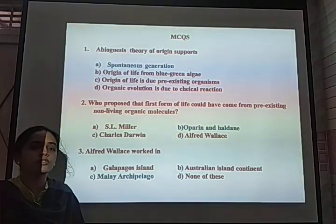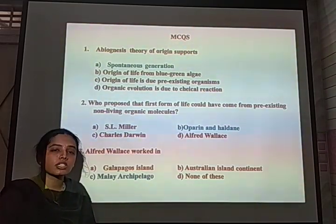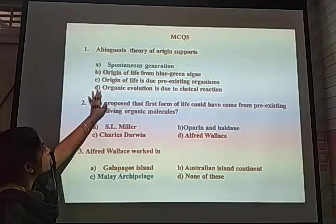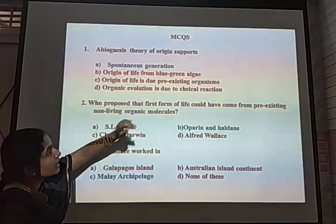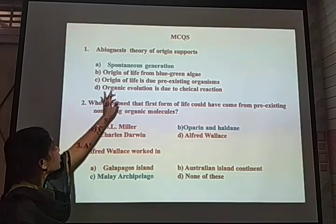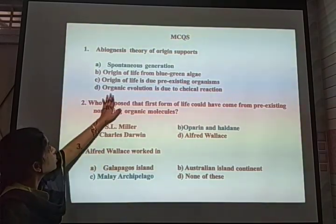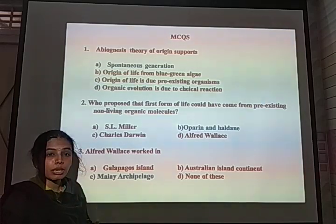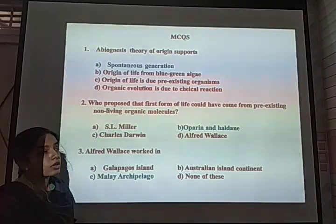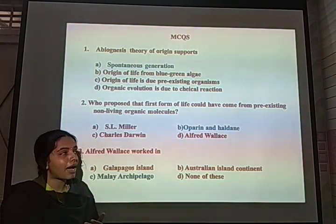Now let us discuss some MCQs from this chapter. First: Abiogenesis theory of origin supports — abiogenesis means living organisms existed from non-living substances. The options are spontaneous generation, origin of life from blue-green algae (cyanobacteria), origin of life from pre-existing organisms (biogenesis), and organic evolution due to chemical reaction. The answer is spontaneous generation, because abiogenesis supports the idea that living organisms arose in a spontaneous manner.